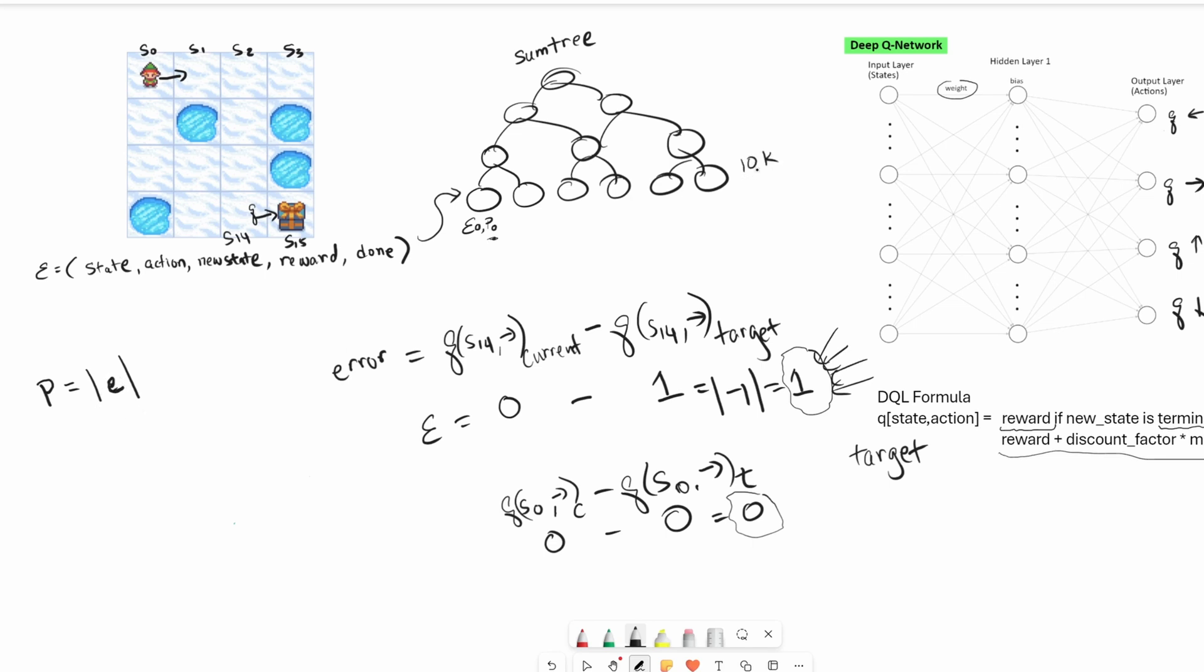We need a little bit more to this formula. If we have a sum tree with 10,000 leaf nodes, we can store 10,000 experiences. When's a good time to update the priority? It will be too time consuming to update all the leaves, right? What we should do is update the stuff that we train with. So if we do a batch of 32, we'll do the training, and then we'll update the priority of those samples.